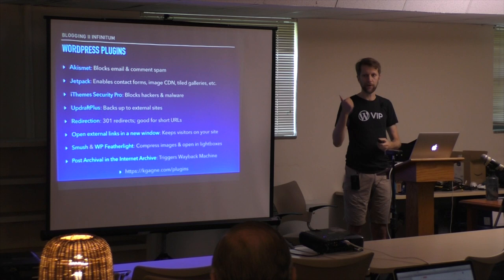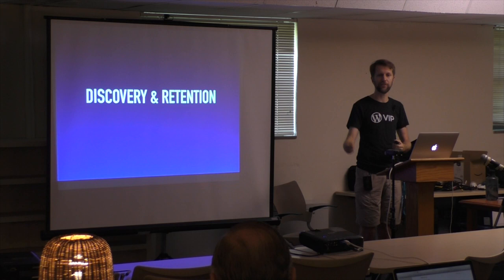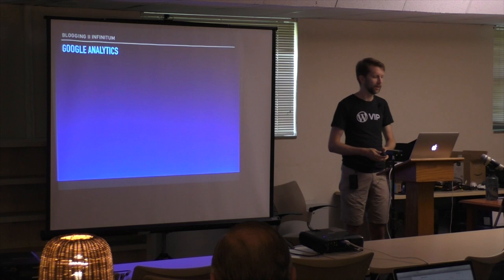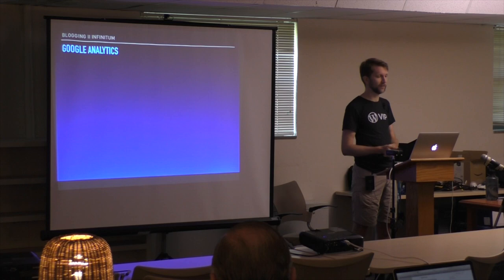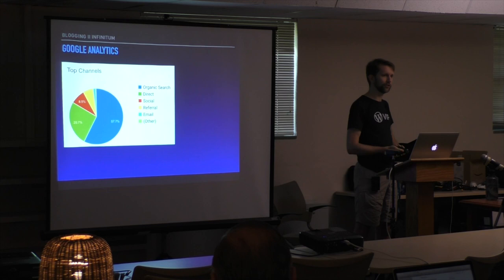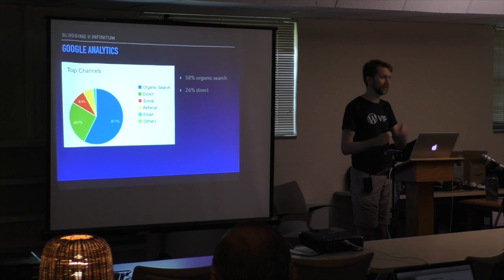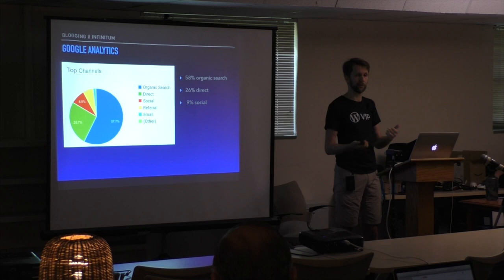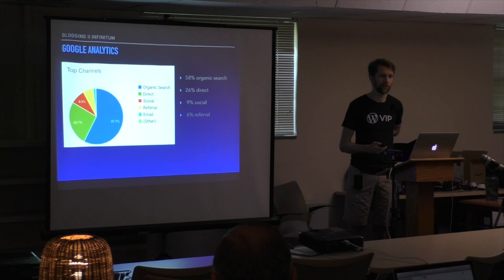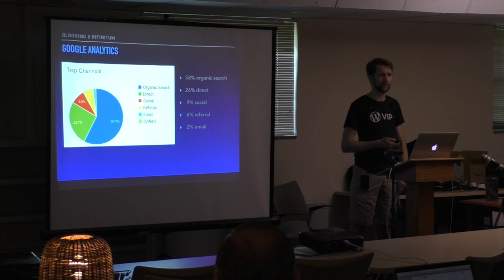Now let's talk about discovery and retention — how do people find and stay on your website? Looking at my Google Analytics for Apple 2 Bits: 58% of people come through organic search, just typing words into Google; 26% are direct — typing the URL or using a bookmark; 9% is social, from Twitter and Facebook shares; 6% is referral from other websites linking to mine; and 6% is email from my newsletter. The most popular page on my website is not any particular blog post — it's the homepage. However, only 17% of all my traffic actually goes to the homepage, meaning most visitors never see it. Most people land directly on individual articles from Google or social media.